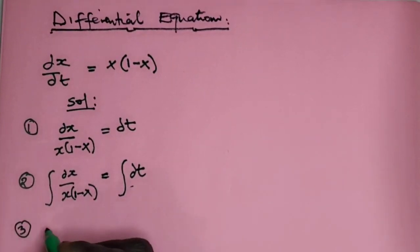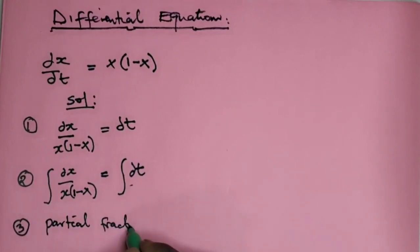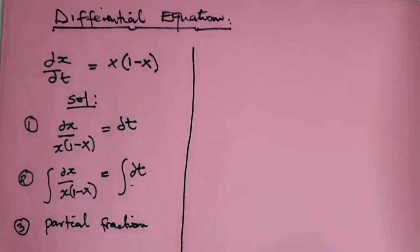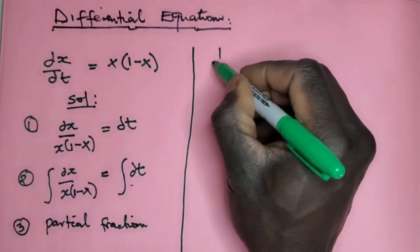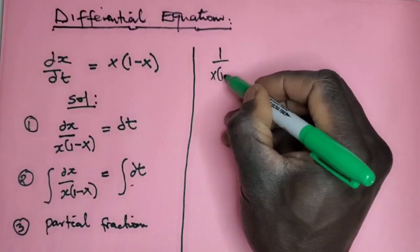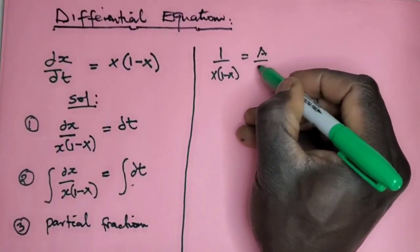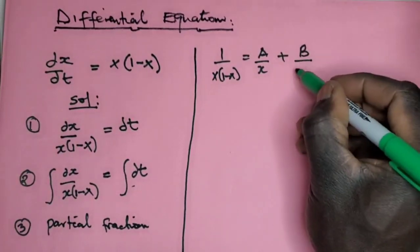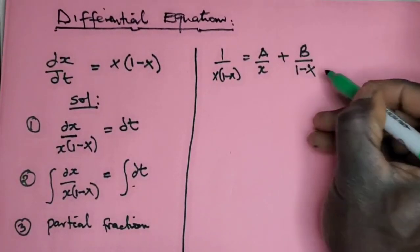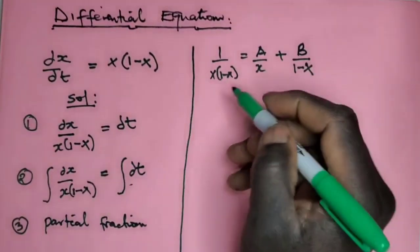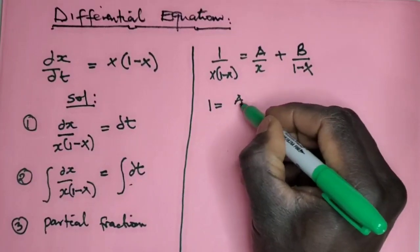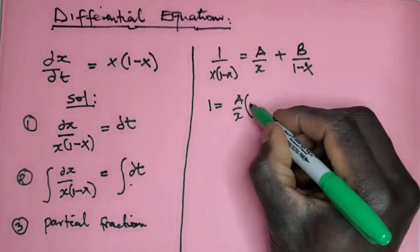So number three, we will use partial fractions. In partial fraction here, we're going to say 1 over x(1-x) = A over x plus B over (1-x). We just decompose it. So you multiply both sides by x(1-x).